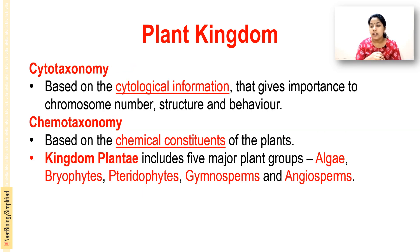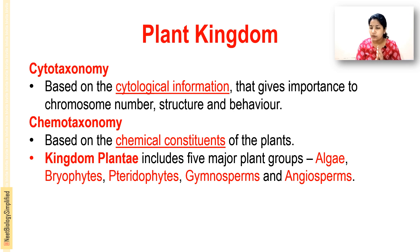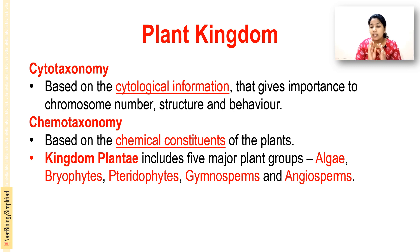Next is cytotaxonomy. In cytotaxonomy, cytological information — that is, chromosomes, their numbers, structures, and behavior — is considered for classification. Next is chemotaxonomy, which is based on the chemical constituents of the plant. What chemical components are present in the plant cells or body is used to classify the plants.